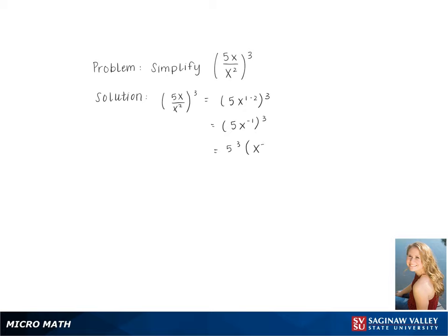Then we cube the coefficient and the variable, giving us 5 cubed times x to the negative 1 cubed. Simplifying, we get 125x to the negative 3rd. Moving the exponent to the bottom of the fraction, we get 125 over x cubed as our final answer.